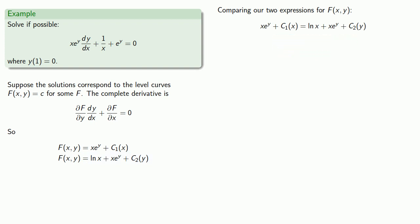And if we rearrange and simplify, that says that c1 of x must be log of x, and c2 of y must be a constant, which we can now ignore because that will become part of our level curve equation.